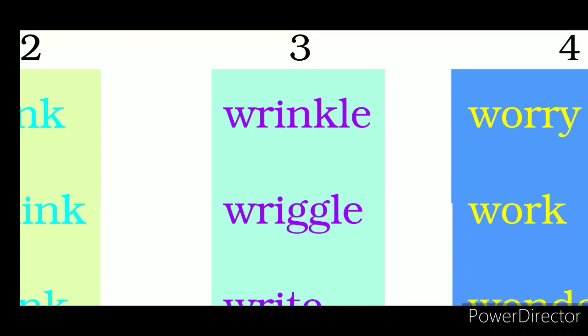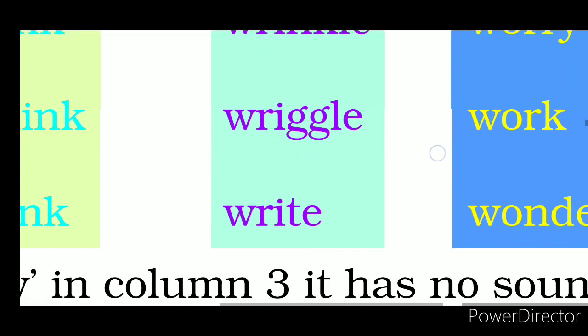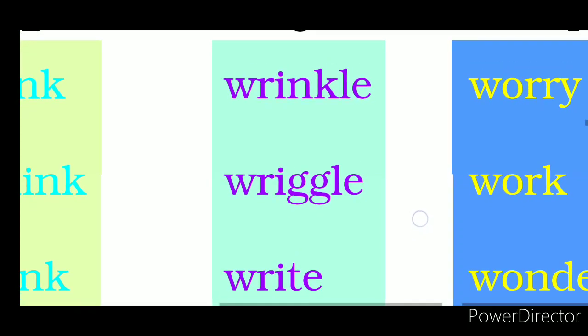W-R-I is written for pronunciation which gives the sound ri. W-R-I-N-K-L-E, wrinkle. W-R-I-T-E gives the sound right, because I-T-E is there so it will be write. Okay?